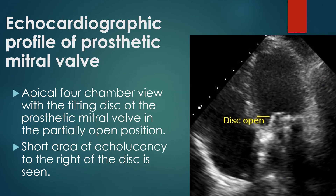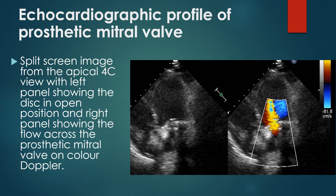The apical 4-chamber image shows the tilting disc of the prosthetic mitral valve in a partially open position, with a short area of echolucency to the right side of the disc. A split-screen image from the apical 4-chamber view shows the left panel with the disc in the open position and the right panel showing colour Doppler flow across the prosthetic mitral valve.